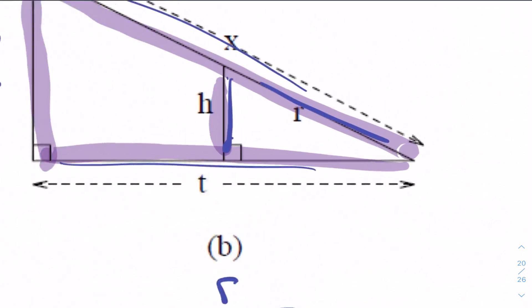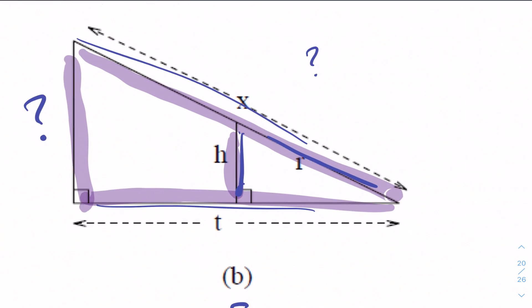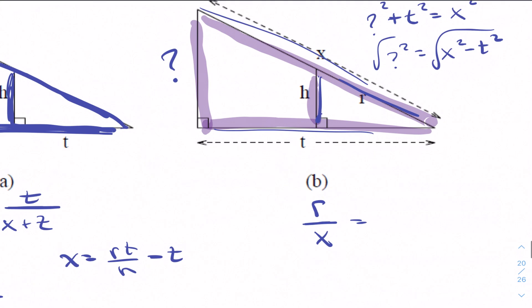So what we would have to do is find this missing piece in comparison to what we were given. And the way you would do that is this question mark plus t squared is equal to x squared. So that missing side is really x squared minus t squared, or the square root of both of those.